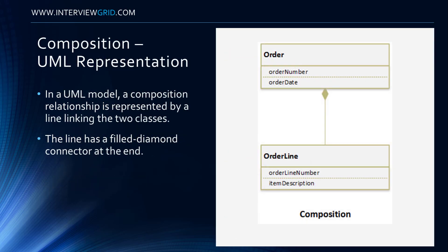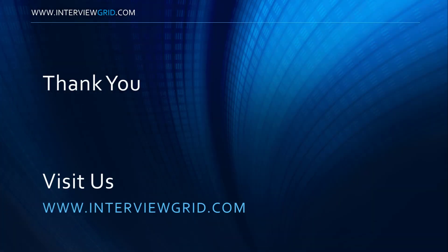In a UML model, a composition relationship is represented by a line linking the two classes. The line has a filled diamond connector at the end.